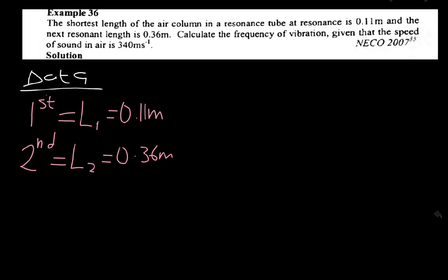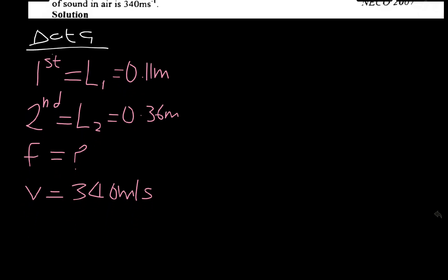Calculate the frequency. Calculate the frequency of vibration, given that the speed of sound in air is 340 meters per second. 340 meters per second.